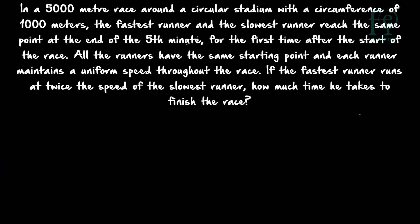Now question number 2: In a 5000 meter race around a circular stadium with a circumference of 1000 meters, the fastest runner and the slowest runner reach the same point at the end of the 5th minute for the first time after the start of the race. All runners have the same starting point and each runner maintains a uniform speed throughout. The total length of the circular track is equal to 1000 meters.